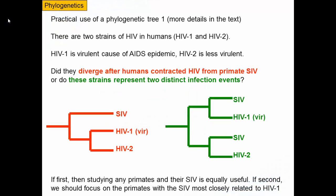Now that we have a sense of how phylogenies are made, let's take a look at some examples of what they're used for.